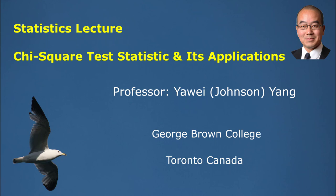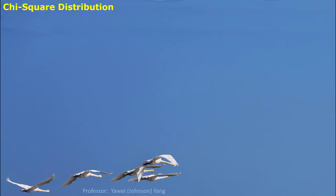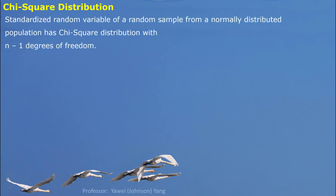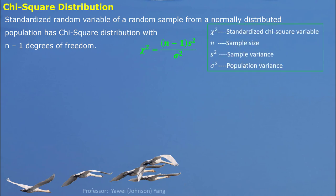Here we talk about the chi-square test statistic and its application. Chi-square test statistics come from the chi-square distribution. A standardized random variable of a random sample from a normally distributed population has a chi-square distribution with degrees of freedom n-1. This random variable is called a chi-square random variable. Here, n represents sample size, s-squared is sample variance, and sigma-squared is population variance.